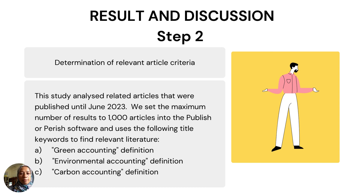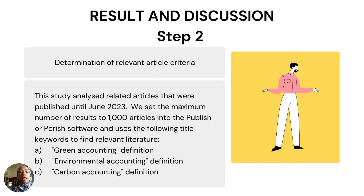We set the maximum number of results at one thousand articles in the publishing software and used the following title keywords to find relevant literature. The first keyword is green accounting, the second is environmental accounting, and the third is carbon accounting definition.